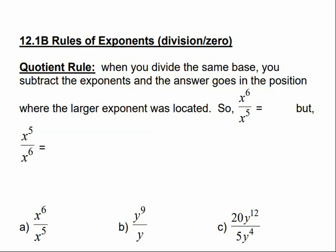Quotient means division, and the quotient rule says when you divide the same base, you subtract the exponents, and the answer goes in the position where the larger exponent was located. For example, x to the 6th divided by x to the 5th: 6 minus 5 is 1, and the answer goes in the numerator because the biggest exponent was in the numerator, so it's just x, or x to the 1.